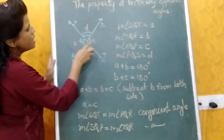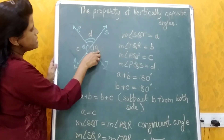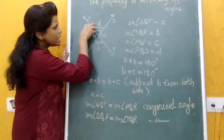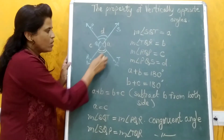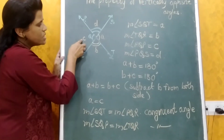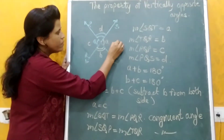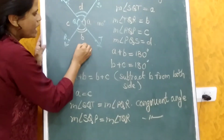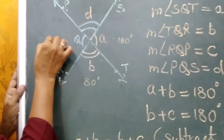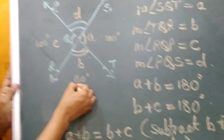If in this linear line angle A is 100 degrees, then angle C is also 100 degrees. And if A is 100, then B is 80 degrees — because a linear line forms 180 degrees, so the addition is 180. If we suppose A is 100 degrees, then B will be 80 degrees. The total of the linear pair is 180, so 100 plus 80 gives 180.